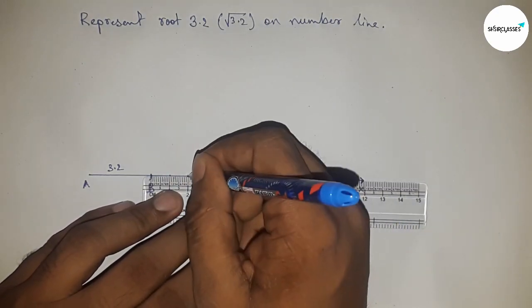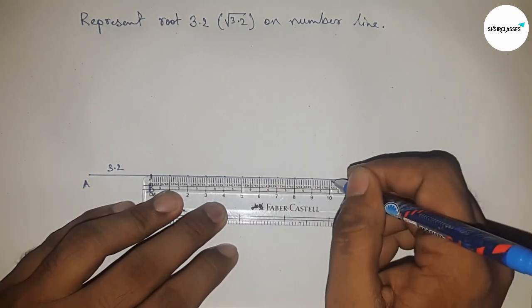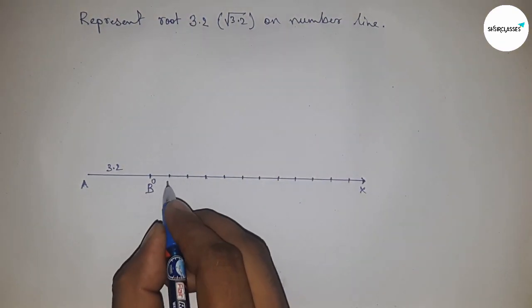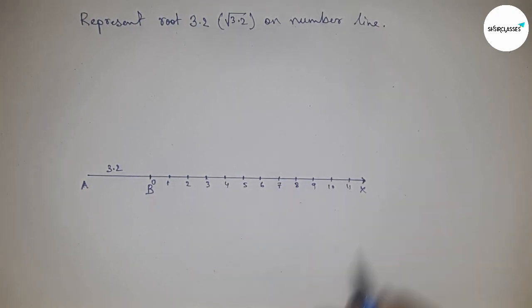Mark the numbers on the line from B to X using a scale. Here we're marking the numbers: 0, 1, 2, 3, 4, 5, and so on. Take this as point C.